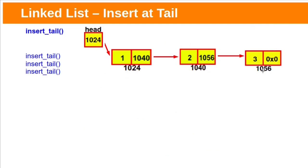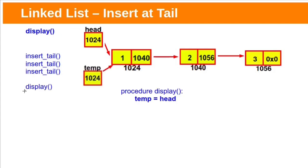Right now we have three elements in our linked list. Head is pointing to the starting node. We have created the linked list. Let's see how to print the list contents. Here we are using a display function to print the contents of the linked list.